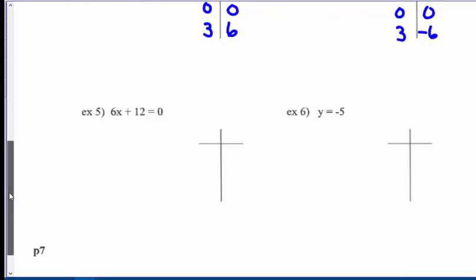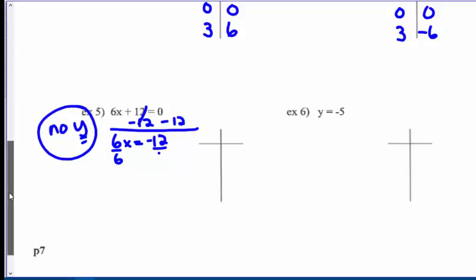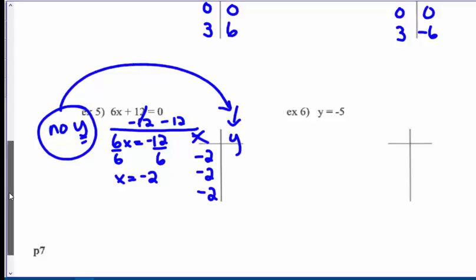6x plus 12 equals 0. Hmm, there's no y. Yes, sometimes that happens. This is a unique example here. So I'm going to solve it for x. So I'm going to subtract 12 from both sides, and I get 6x equals negative 12. Dividing by 6, I get x equals negative 2. So I do not have a choice. Every time my x's have to equal negative 2. My y's, I can choose any value for y. So this is what's unique. I don't have a y, so here's where I'm going to reverse what I was doing in the four examples above.